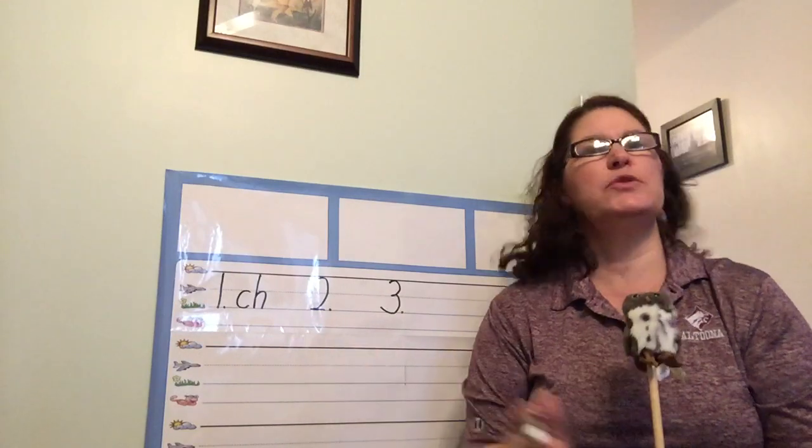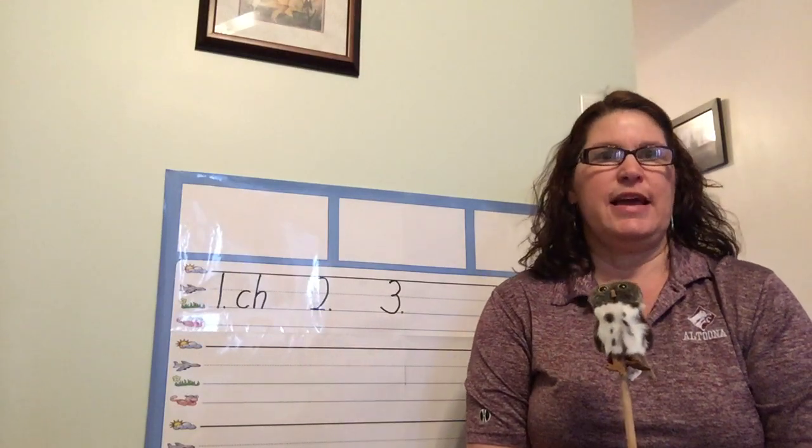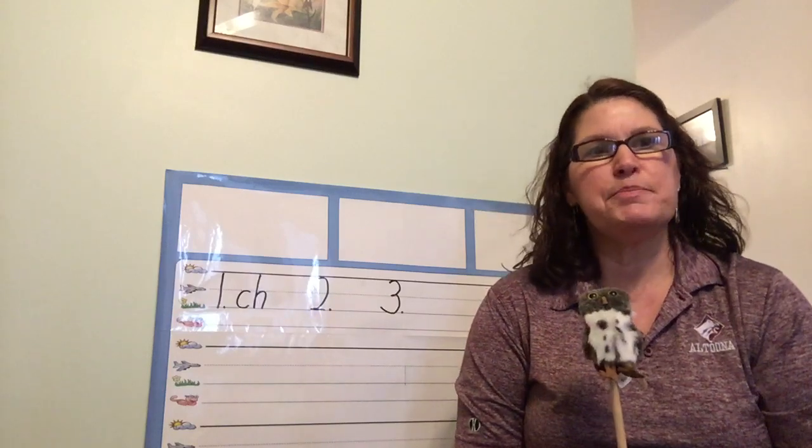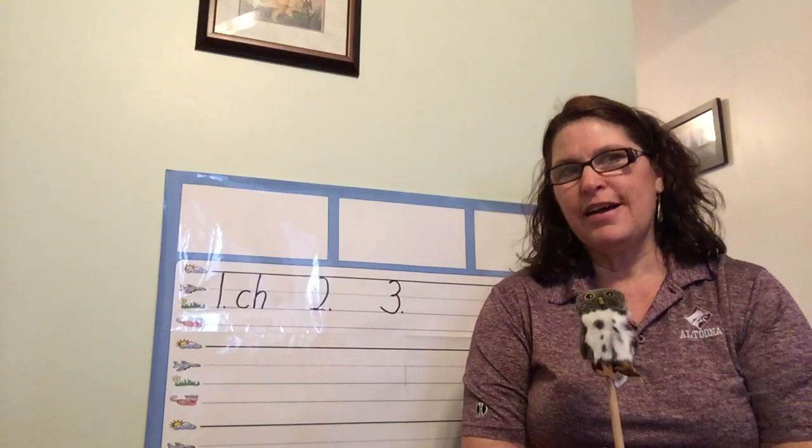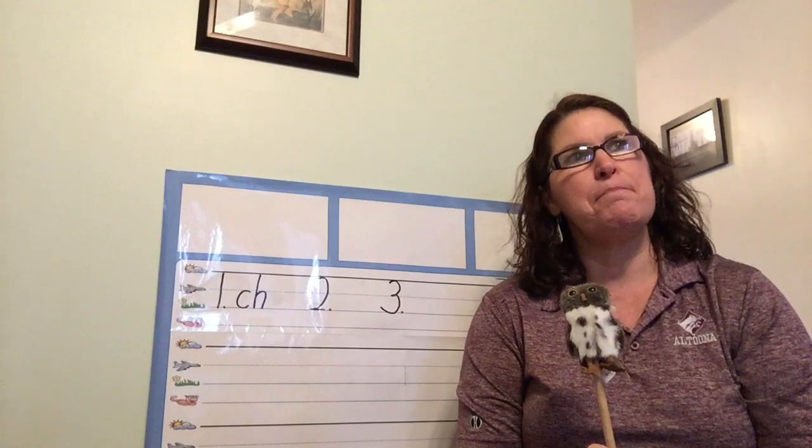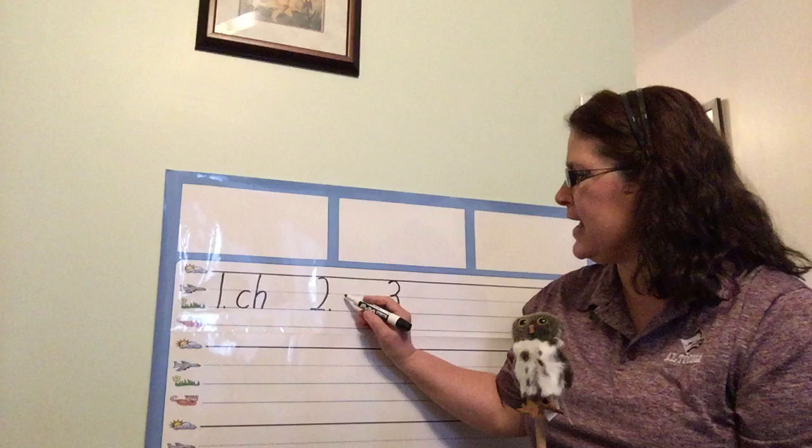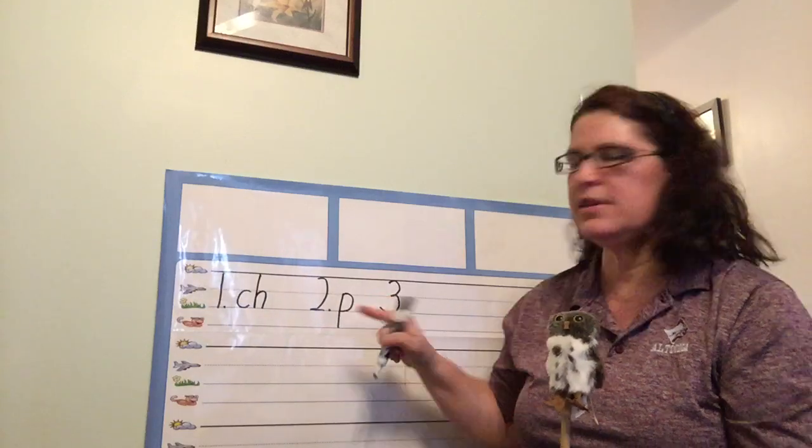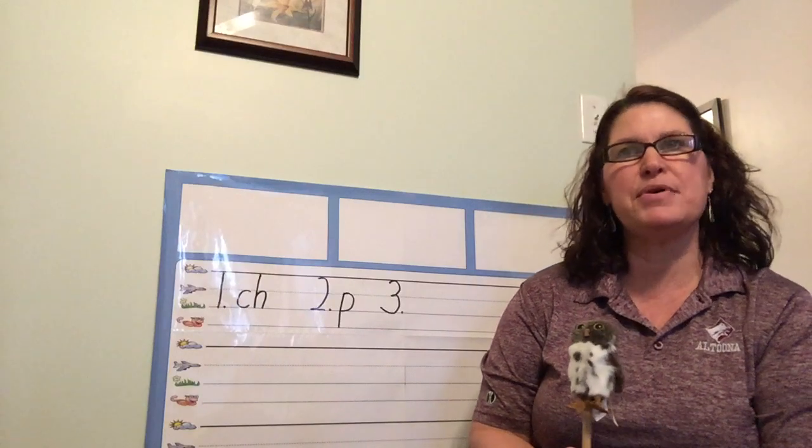Second sound number two. Here we go. Say pp. What says pp? Yes. P-p-p. P sits on the line. P-p-p.